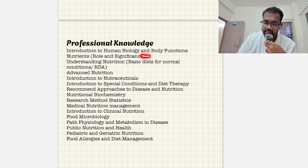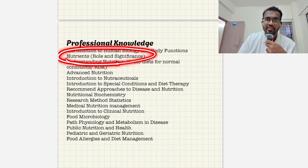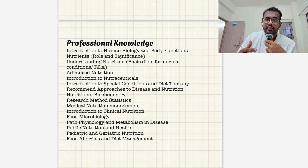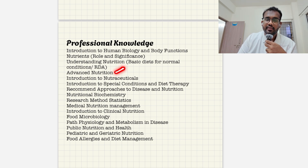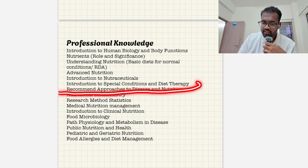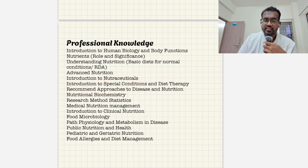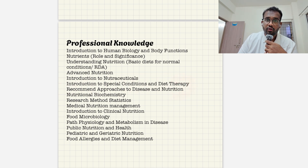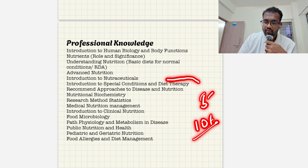The major topics to focus on are first, nutrients — their roles, significance, RDA values, functions, and deficiencies for all nutrients. Then comes advanced nutrition, covering disease conditions caused by vitamin deficiencies. Next are introduction to special conditions of diet and recommended approaches to diseases and nutrients. These are major topics from which you will get almost five to ten questions, so make sure you read them very well.